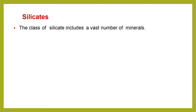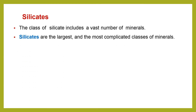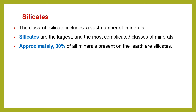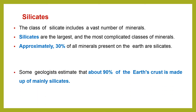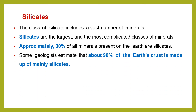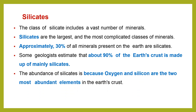Now we come to the most famous class of minerals: silicates. This class includes a vast number of minerals — they are the largest group of minerals and the most complicated class as well. They represent approximately 30 percent of all minerals present on the Earth's crust, and some geologists estimate about 90 percent of the Earth's crust is made mainly of silicates. The abundance of silicates is because oxygen and silicon are the two most abundant elements in the Earth's crust, so it is normal that silicates are the most abundant minerals.